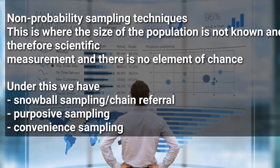For non-probability sampling techniques, this is where the size of the population is not known, there is no scientific measurement, and there is no element of chance. Under non-probability sampling, we have three methods: snowball sampling, also known as chain referral; purposive sampling; and convenience sampling. We are going to explain the sampling techniques in detail in our next video. Thanks for watching — don't forget to subscribe, like, comment, share with your friends, and watch the next video where we shall be continuing with topic two of business statistics.